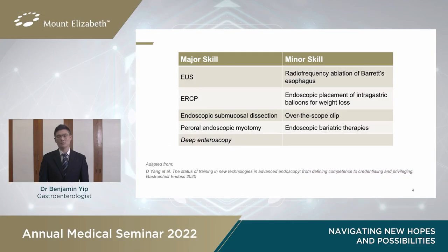Advanced endoscopy is divided into major and minor skills. For the major skills, we have EUS or endoscopic ultrasound, we have ERCP or endoscopic retrograde cholangiopancreatography, we have ESD or endoscopic submucosal dissection, and so on. There are also minor skills, including radiofrequency ablation or RFA, or endoscopic placement of intragastric balloons for weight loss, and so forth.